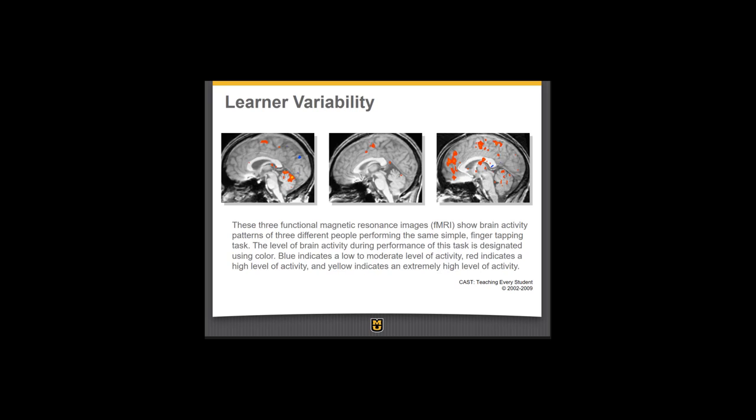The UDL framework is based on learner variability, which is a scientifically validated construct. We all use different parts of our brains to do all kinds of things. No learner is exactly like another learner. This slide shows how even the simplest task is processed in different parts of our brain. You will see three people — each person was asked to do the same task: tap their fingers. You'll notice by the MRI scans that different people's brains light up in different areas.